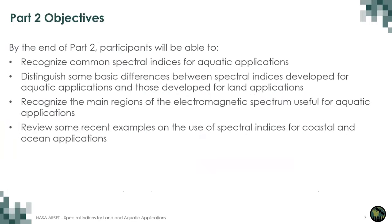Specifically for part two today, participants will be able to recognize some of the common indices particularly for aquatic applications, and to distinguish some of the basic differences between those indices developed for aquatic systems versus the ones developed for land applications. Also, to recognize some of the main regions of the electromagnetic spectrum that are useful for aquatic applications, to review recent examples of the use of these indices for coastal and ocean applications, and we will have a short demo on using Google Earth Engine for calculating some of these indices.